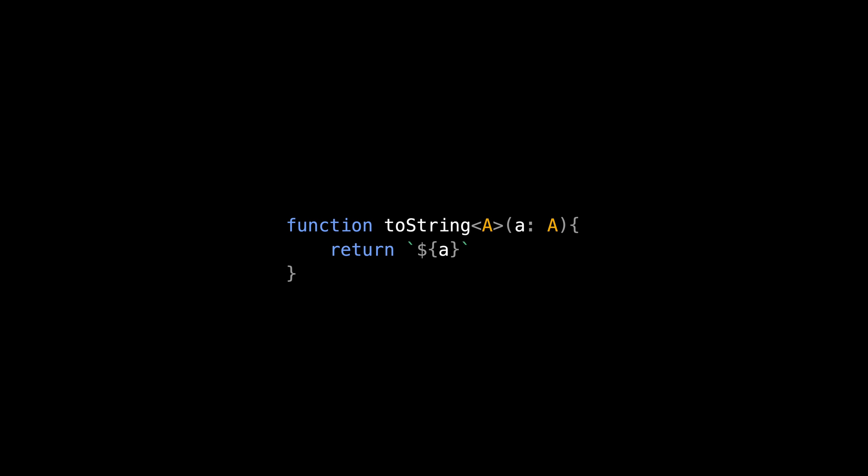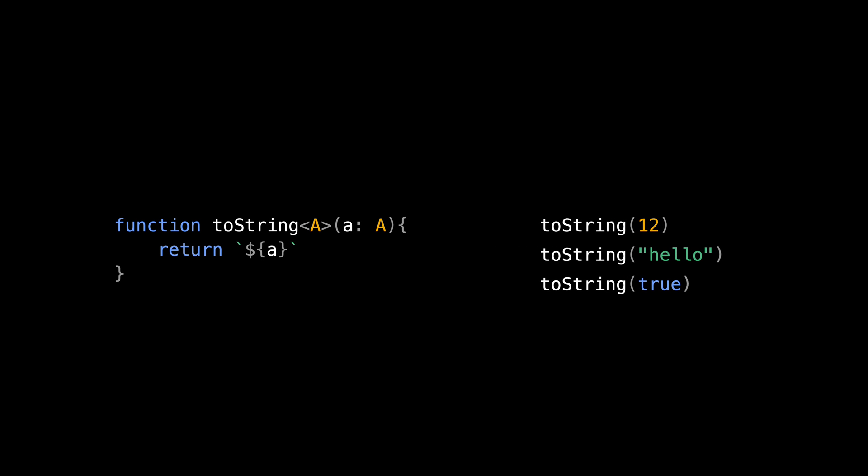Let's see what this means with a couple of examples. Take a look at this function. Function toString is a generic function that works with any type parameter A. We can call this function with a value in integer, string, boolean or any possible value in any type. This allows a function to work with different types without us as developers needing to specifically code for a particular type.